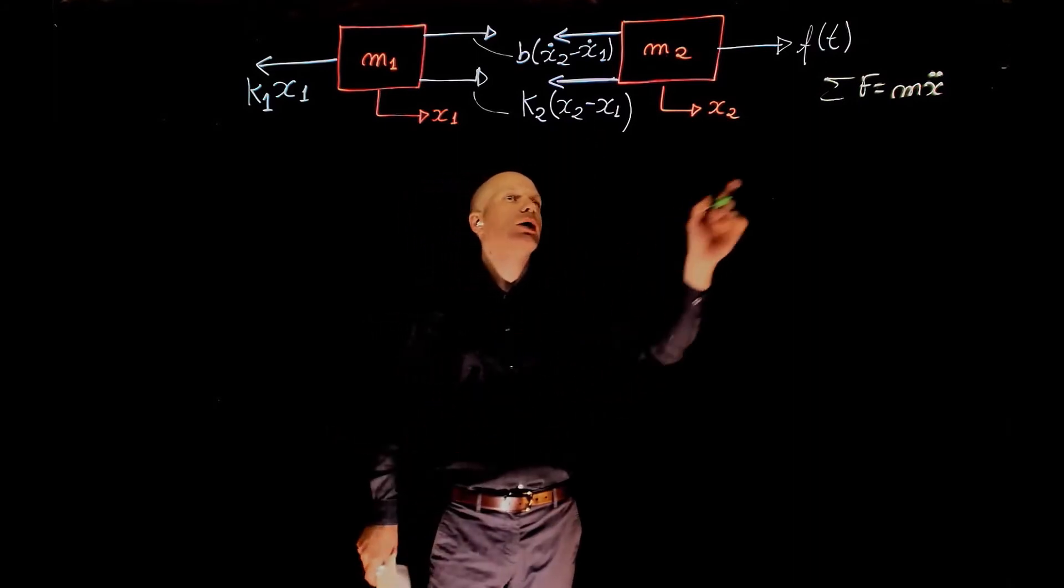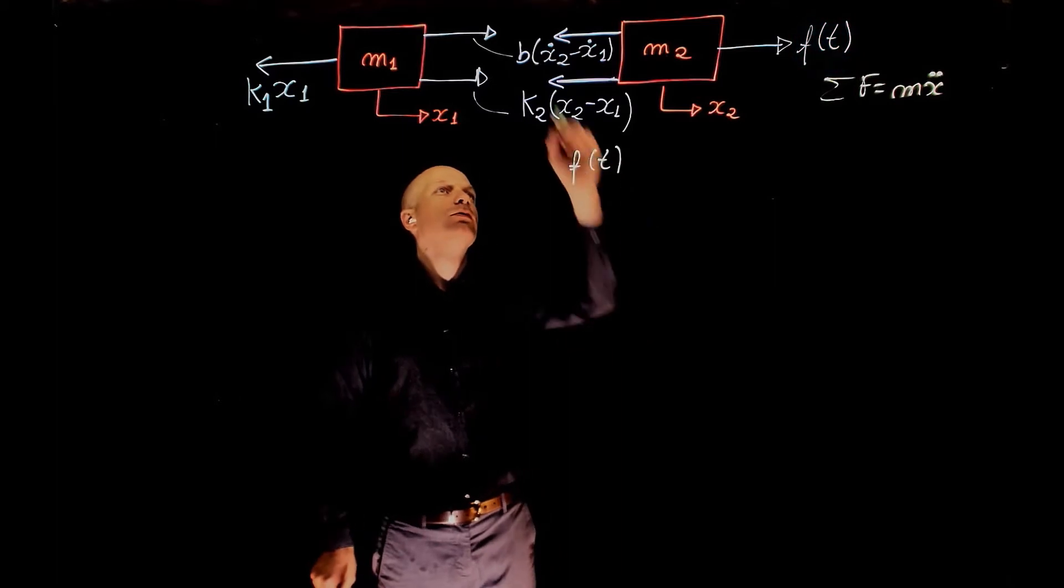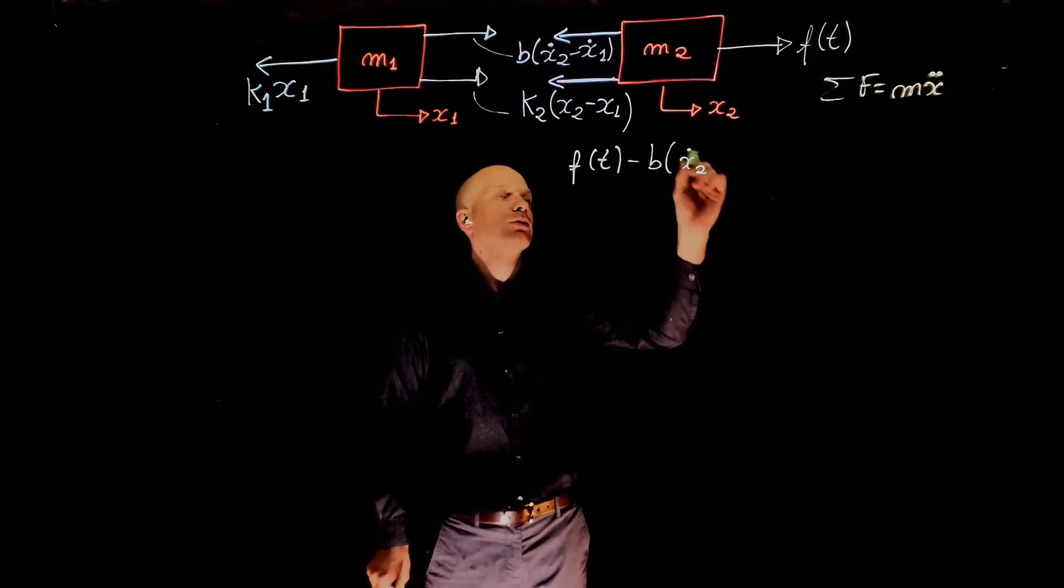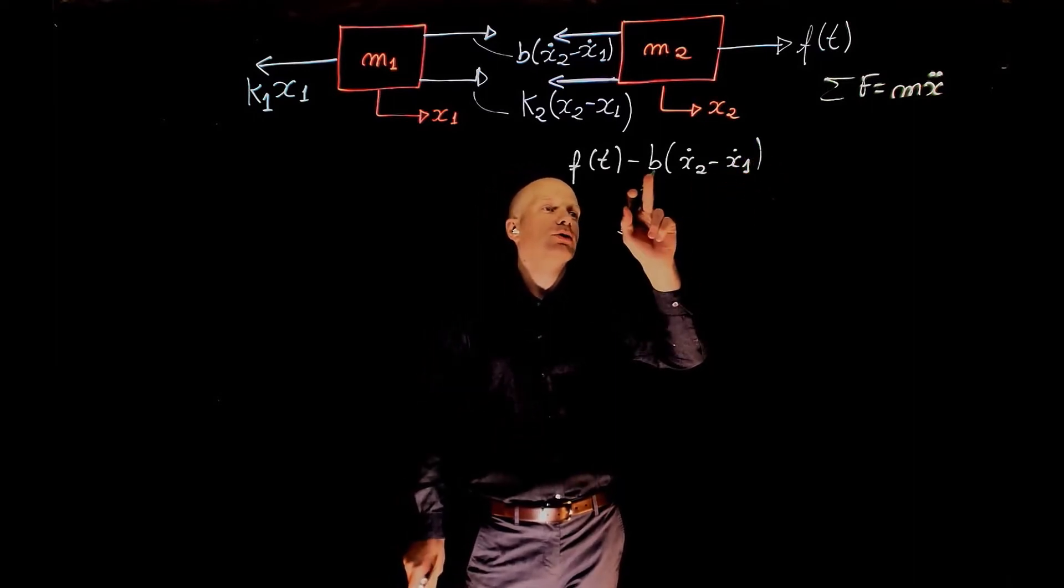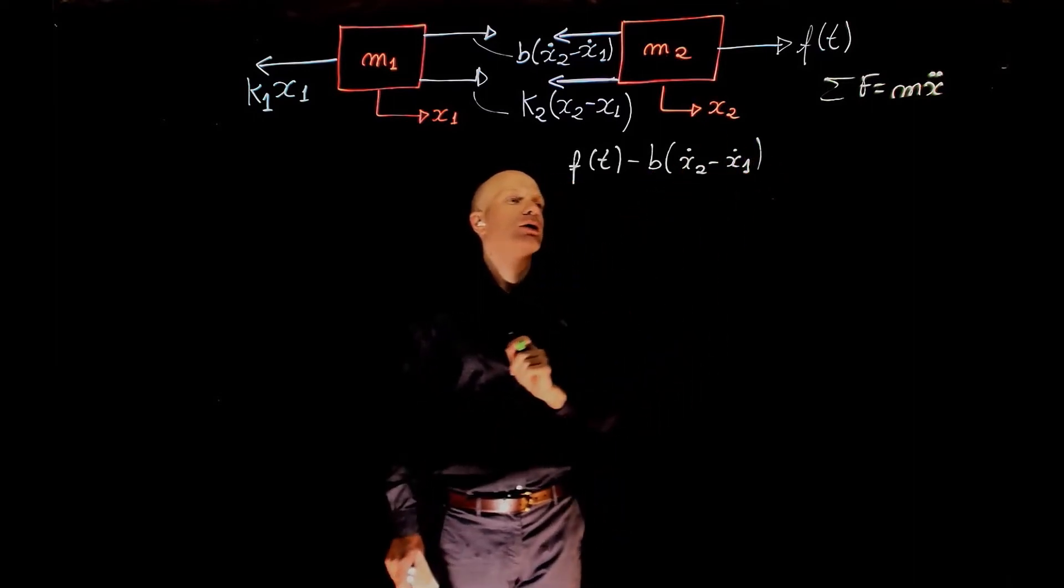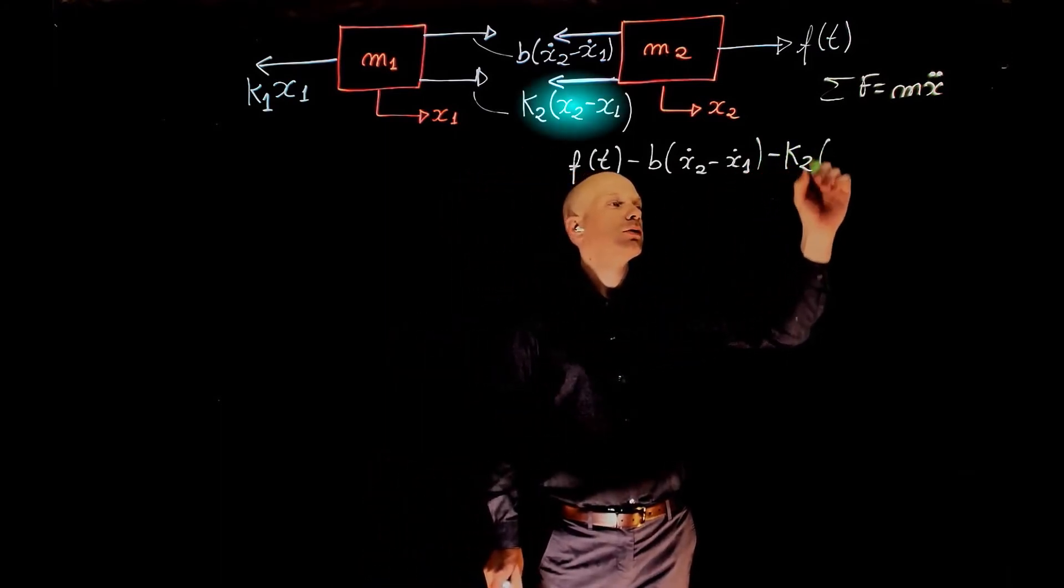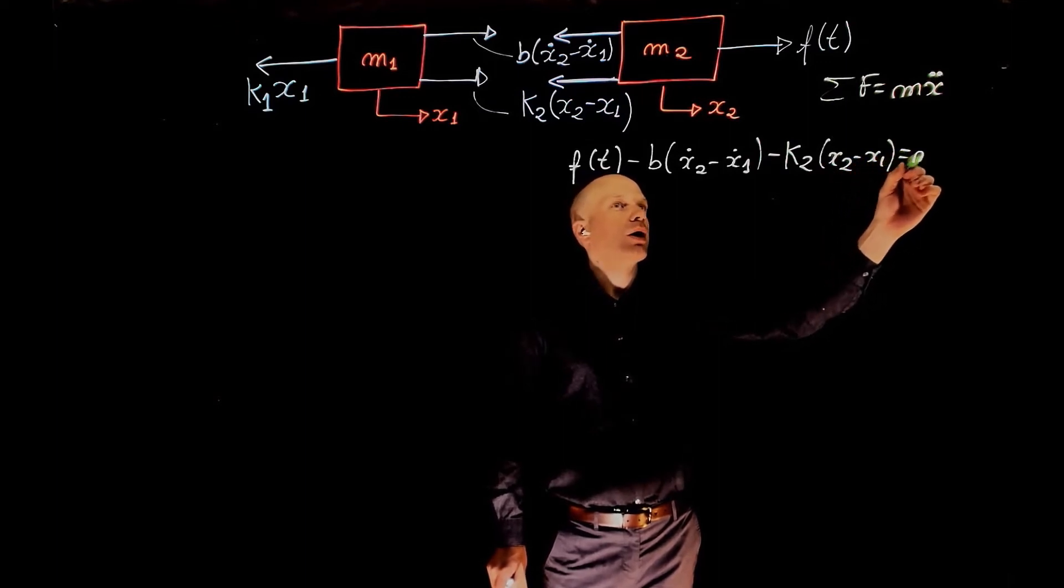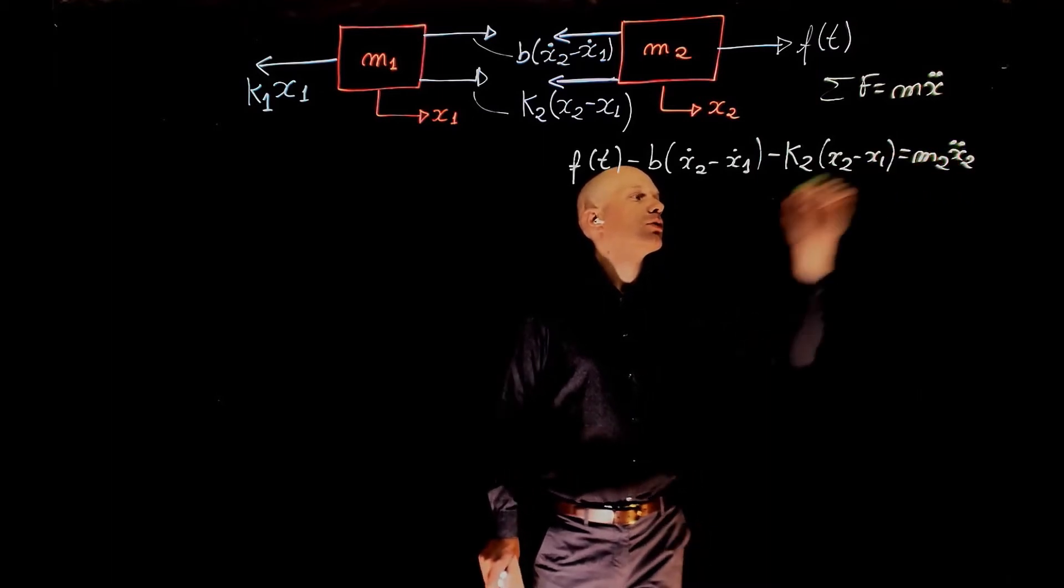For mass M2, that will be f of t minus b times x2 dot minus x1 dot, coefficient of viscous friction, relative velocity across the damper, minus k2 times x2 minus x1 equals M2 x2 double dot.